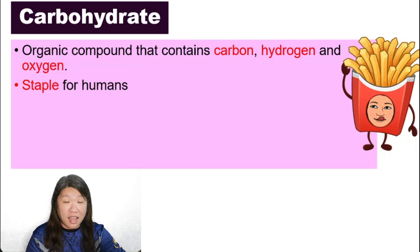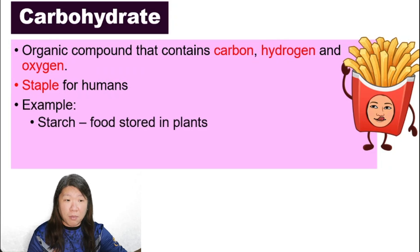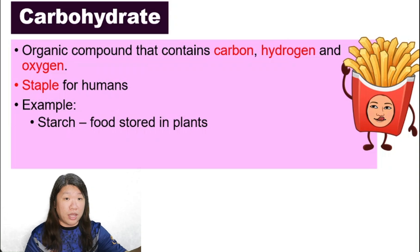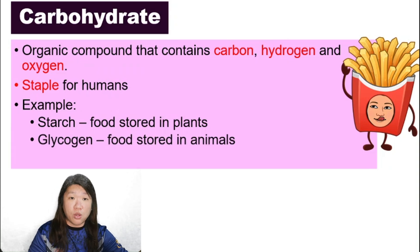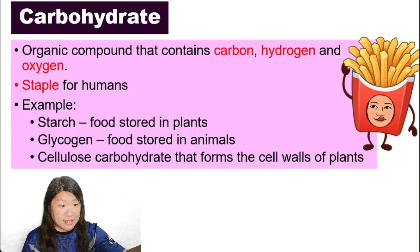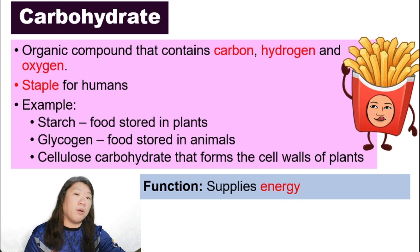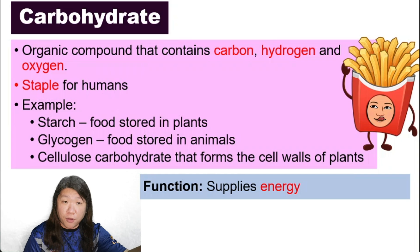For example, for Asians, our staple is noodles or rice. There are three types of carbohydrate: starch, which is food stored in plants; glycogen, food stored in animals; and cellulose, the carbohydrate that forms the cell walls of plants. The function of carbohydrates is to supply us with energy. That is why it is the staple for humans.